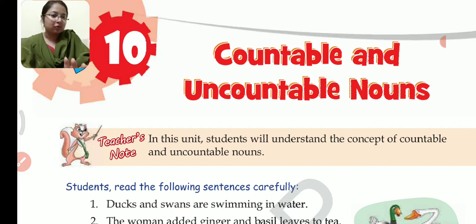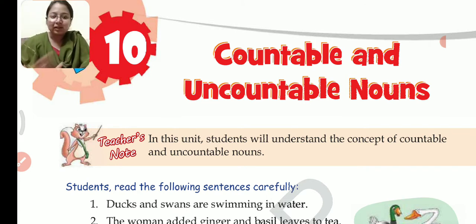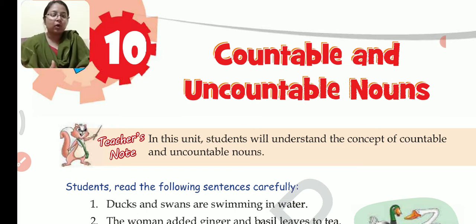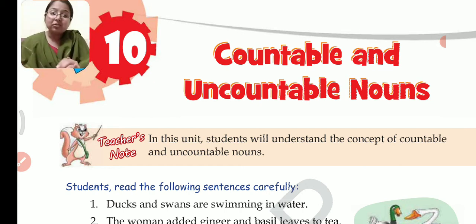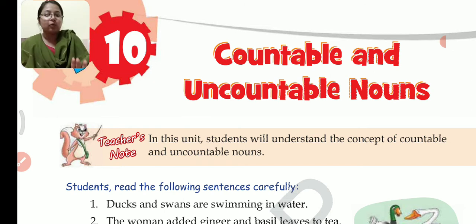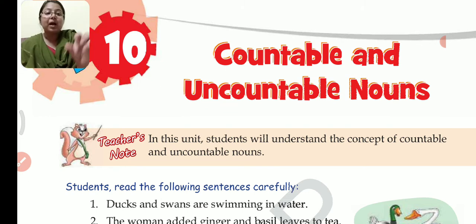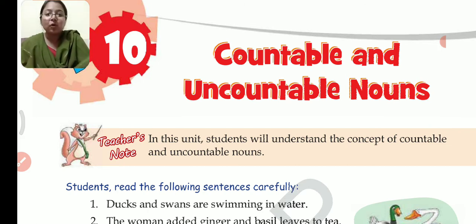This is a very easy chapter for you, because you have already studied about countable and uncountable nouns in your previous classes. You already know the concept. So let me just revise what are countable nouns and what are uncountable nouns. This is basically a revision class for you. The nouns that can be counted refers to countable nouns. Uncountable means that cannot be counted — the nouns that cannot be counted come under uncountable nouns.